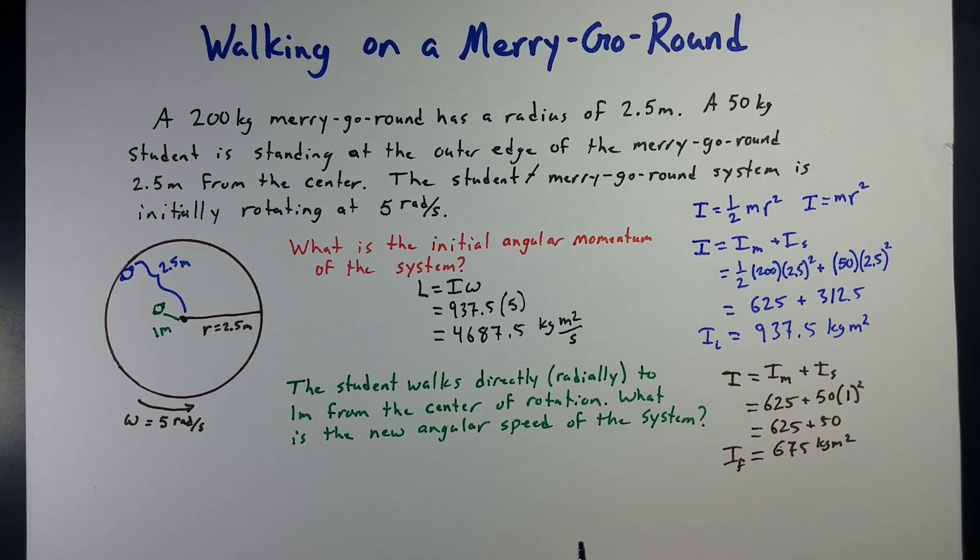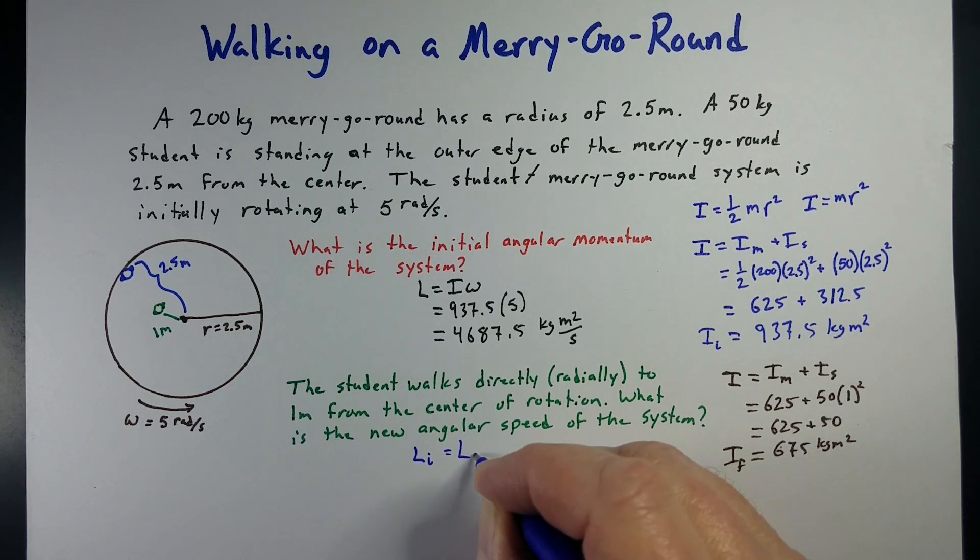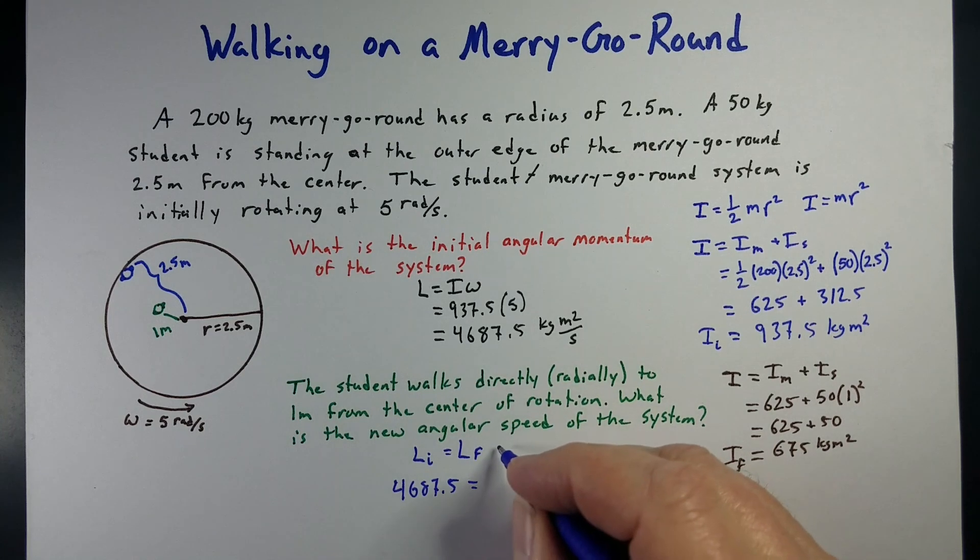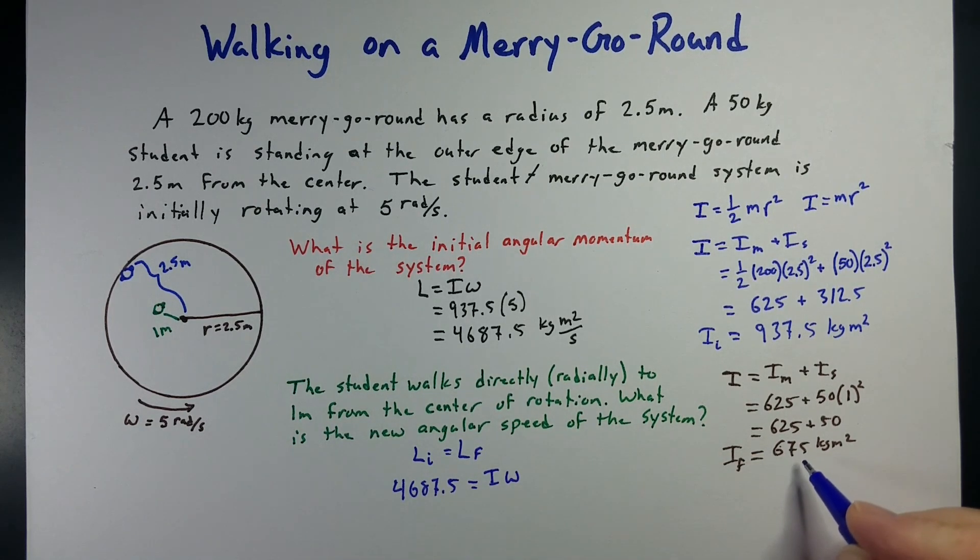Angular momentum is conserved. So, L at the beginning equals angular momentum at the end. So, at the beginning, we had 4687.5, and at the end, well, that's still I omega. Now our I is 625. So, 4687.5 equals 675 omega, which is our angular speed.